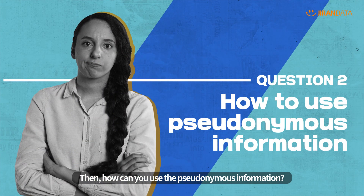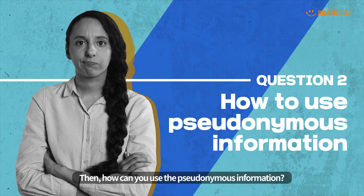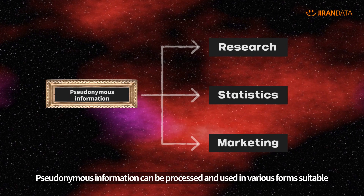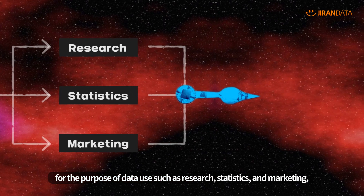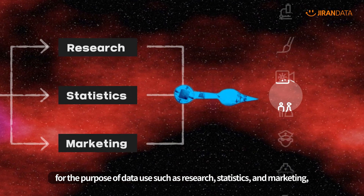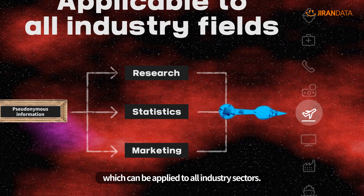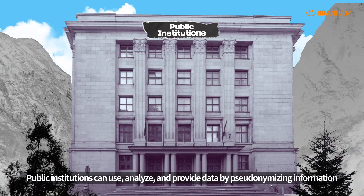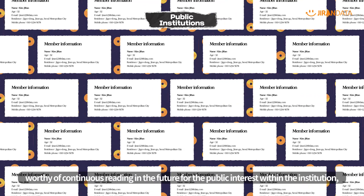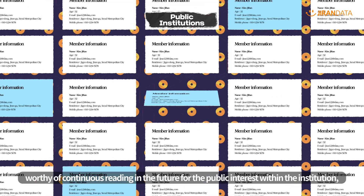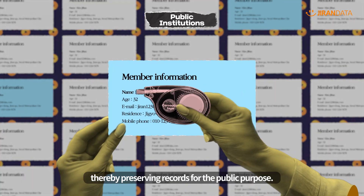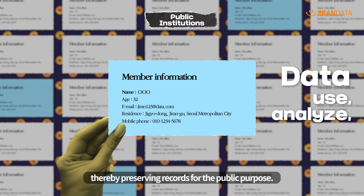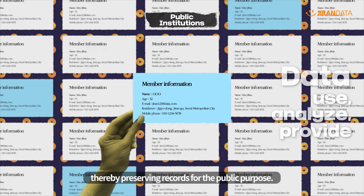How can you use pseudonymous information? Pseudonymous information can be processed and used in various forms suitable for the purpose of data use such as research, statistics, and marketing, which can be applied to all industry sectors. Public institutions can use, analyze, and provide data by pseudonymizing information worthy of continuous reading in the future for the public interest within the institution, thereby preserving records for the public purpose.